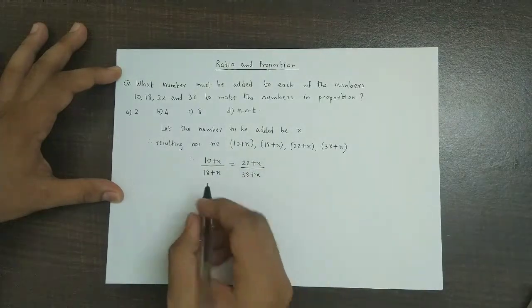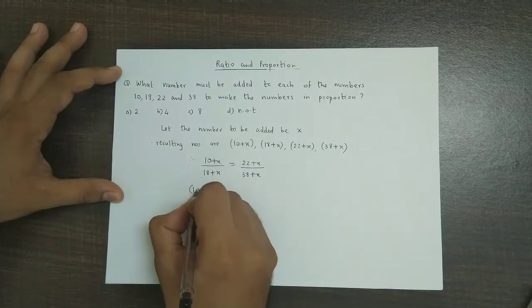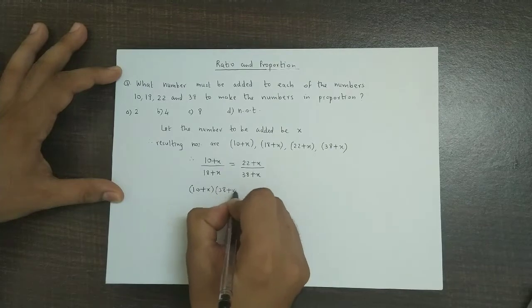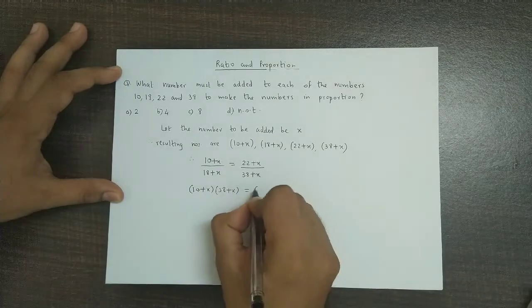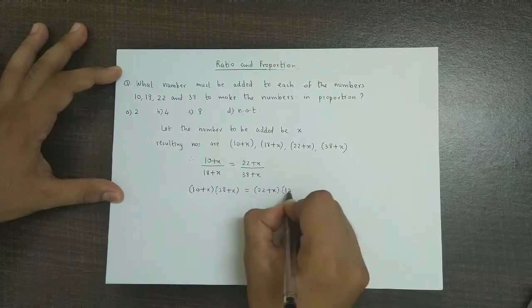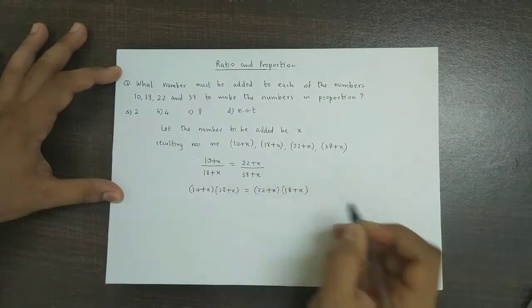Now we simply cross multiply. So we have 10 plus x into 38 plus x is equal to 22 plus x into 18 plus x.